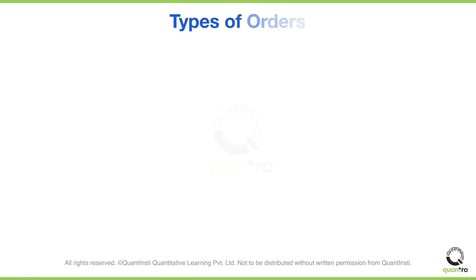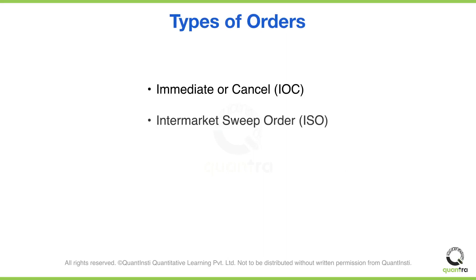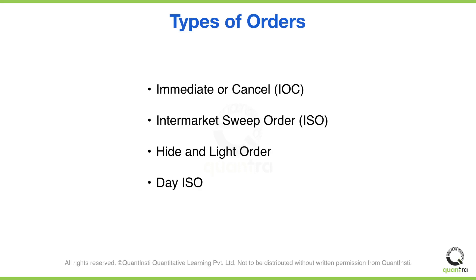We'll be discussing four order types: immediate or cancel, intermarket sweep order, hide and light order, and AISO. Let's go over each of these order types to gain a better understanding, starting with immediate or cancel orders.